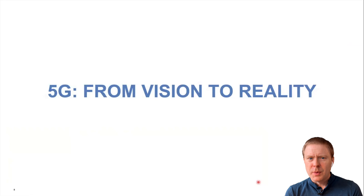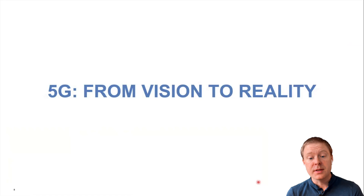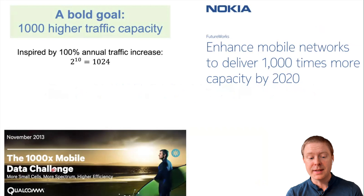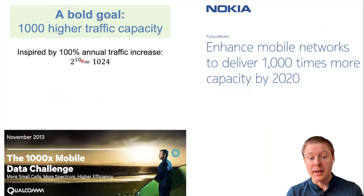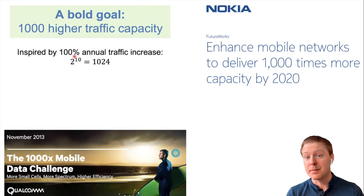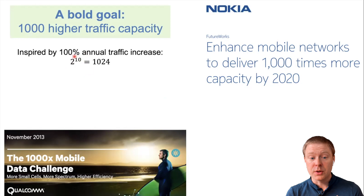When it comes to 5G, we can look back about 10 years and see what visions people had. In 2013, both Qualcomm and Nokia made a bold prediction that we need networks capable of delivering 1000 times higher data traffic. That was based on the idea that if data traffic doubles every year, 2 to the power of 10 is 1024 — roughly 1000 times over 10 years. In reality, traffic may only increase by 60 percent per year, or only 40 percent in developed countries.